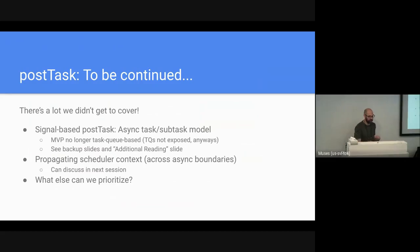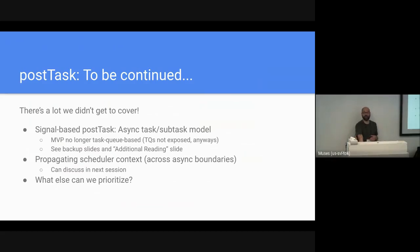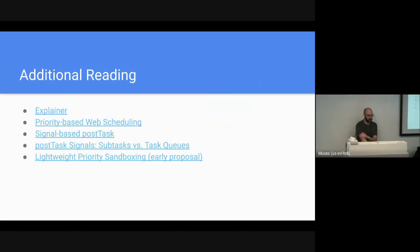We are out of time. There's a lot of stuff we didn't cover — backup slides and doc links are available. There's really interesting stuff around how and why we changed the API shape to be signal-based, which goes into task models. Also, propagating scheduler context — we want to propagate where a task was posted from across async boundaries. And there are a lot of questions around what else we can prioritize.